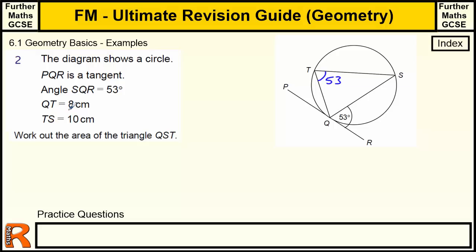Then we're told that QT is 8. So Q to T is 8, and T to S is 10. So we have a triangle. We have two sides and an angle. So we can apply the area of triangle formula where you have the two sides either side of the angle. So the formula is half a b sine c, where a b are the two sides. So a b, two sides either side of an angle c.